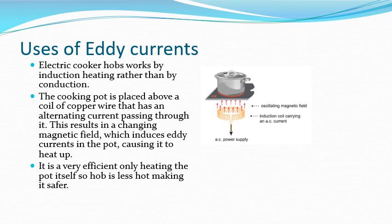Some induction cooker hobs work by induction heating — the advantage being that the hob surface itself does not get hot. A coil of copper wire beneath the surface carries an alternating current, producing a changing magnetic field. This changing magnetic field induces currents within the saucepan placed on top, causing it to heat up. It is very efficient, only the saucepan gets hot, and there is no heat generated at all if no saucepan is present.